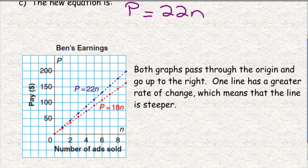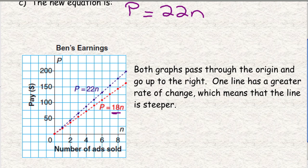So this is how the graph would look. Before, if he was paid $18 per ad, it's not as steep as when he's paid $22 per ad. And that is how the rate changes the line. The rate doesn't change where the line starts over here. It still starts, both lines start at zero. And then he's paid $22 per ad or $18 per ad. $22, of course, is the line that is steeper.